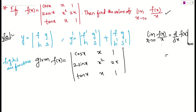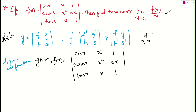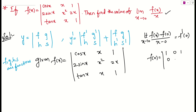Let me give you the easiest explanation. We know the general definition: limit x tends to 0 of [f(x) − f(0)] / [x − 0] is nothing but f'(0). Now, what is f(0)? If we substitute x = 0: cos 0 = 1, sin 0 = 0, tan 0 = 0, and all x terms become 0. So the determinant f(0) = 0. Therefore we can write the limit as f(x) − 0 over x − 0, which by definition equals f'(0).